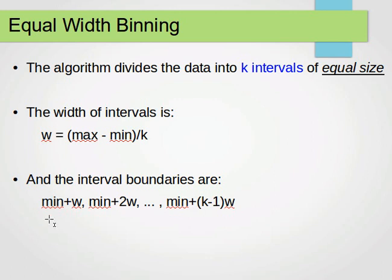The interval boundaries are: the first interval starts at the minimum value and stops at w; the second interval starts at the minimum and stops at 2×w; the third at 3×w, and so on until (k−1)×w. This will be clearer with an example.